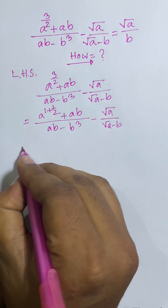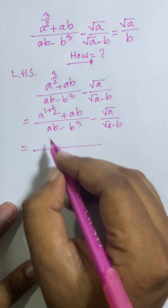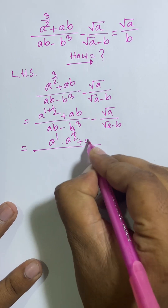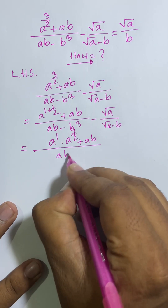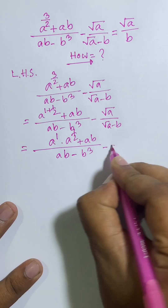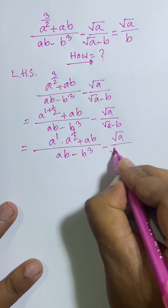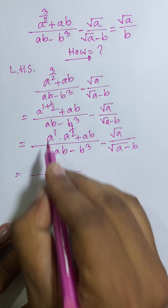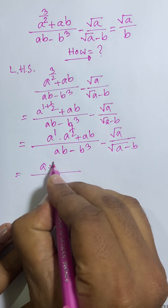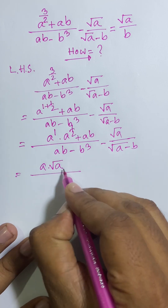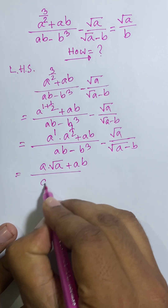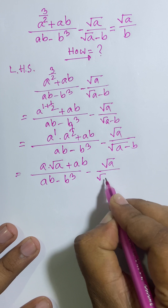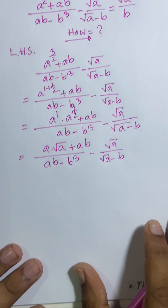So: a to the power 1 times a to the power half, plus ab over (ab minus b squared), minus root over a over (root over a minus b). Now a dot a to the half equals root over a, so we get: a times root over a, plus ab over (ab minus b squared), minus root over a over (root over a minus b).